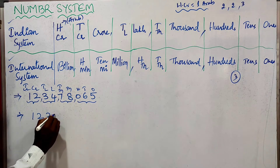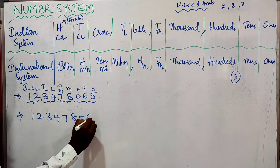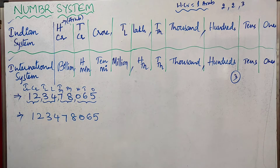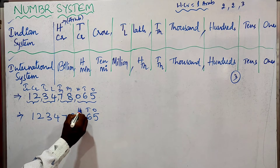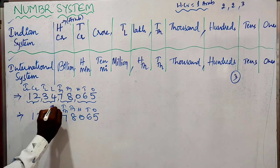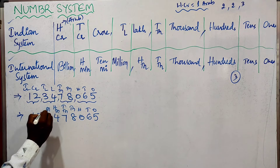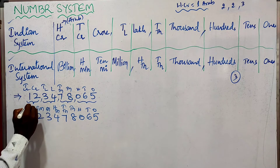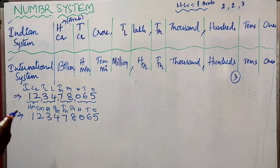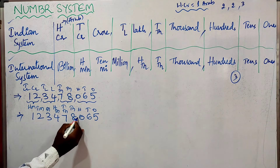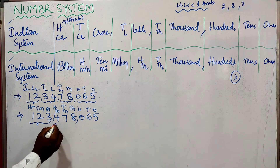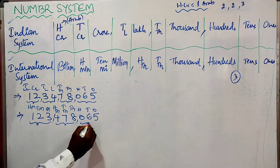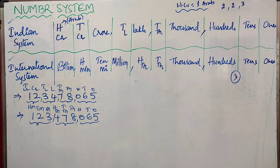Now we will read the same number in the international system. Writing the place values from right to left: 1s, 10s, 100s, 1000s, 10 thousands, 100 thousands, millions, 10 millions, and 100 millions. We place commas after every 3 digits. So the number is read as 123 million, 478,065 in the international system of numeration.